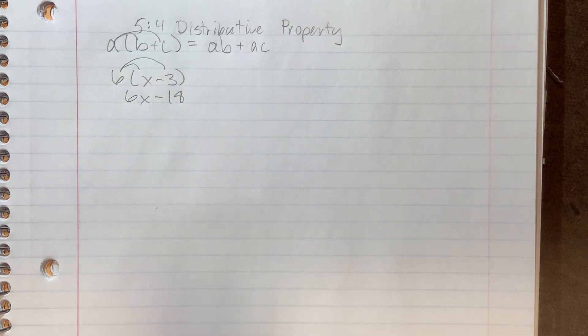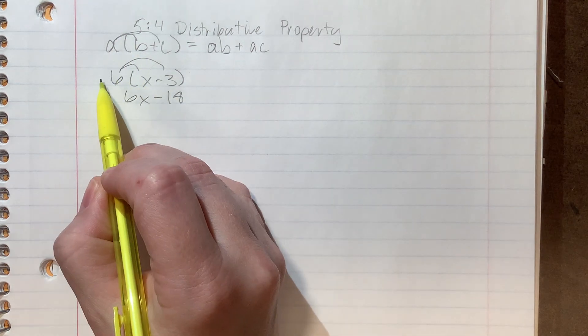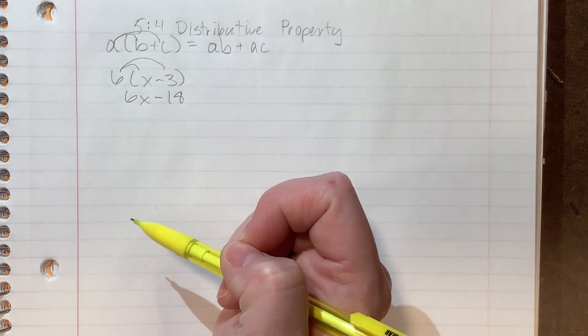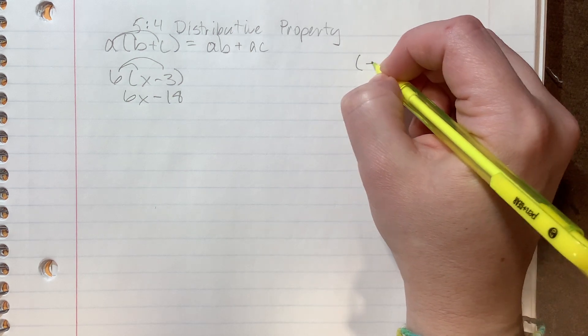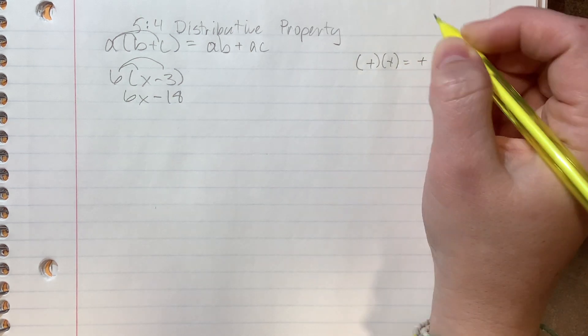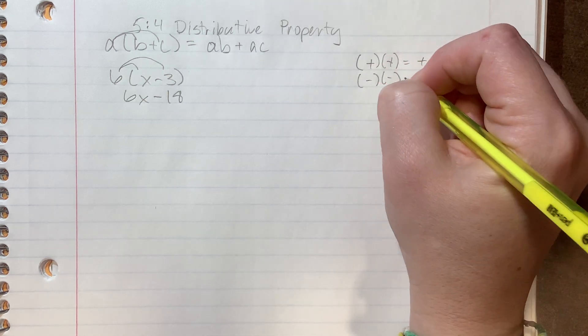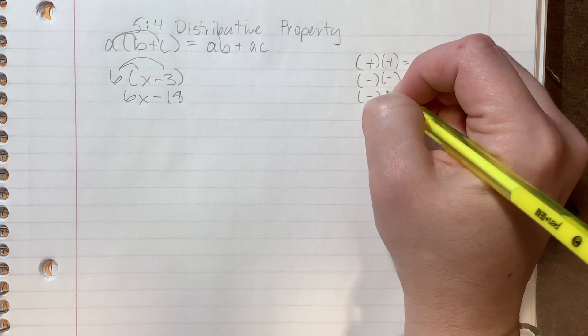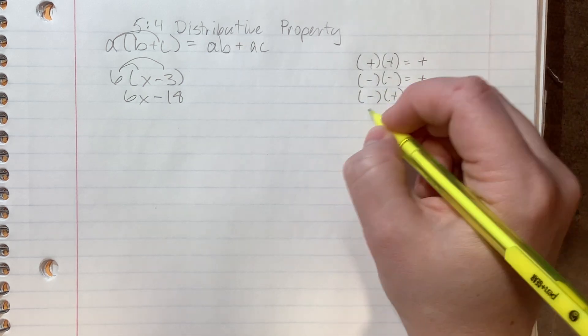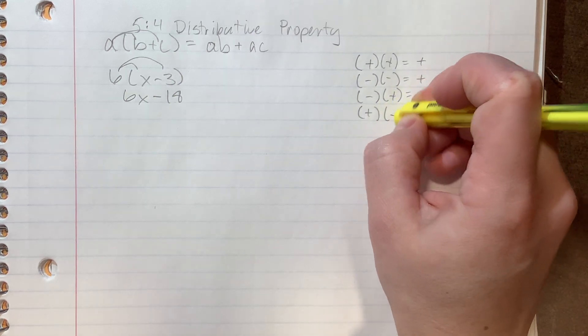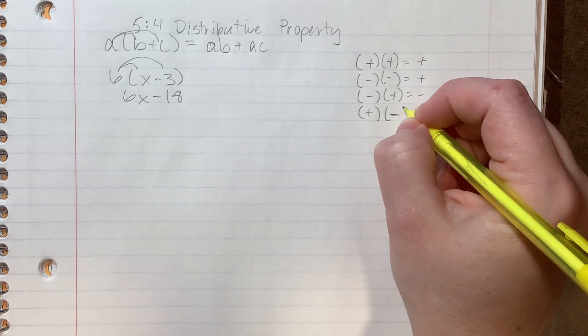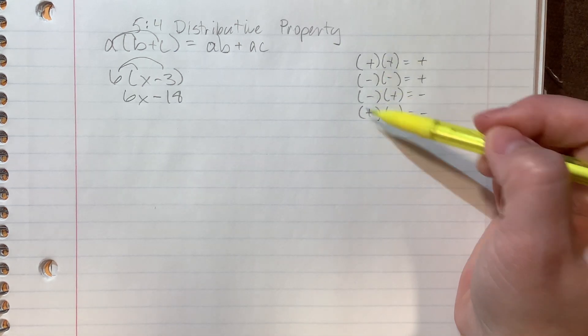Now some things that you need to remember to make this distributing easier is let's remember our rules for positive and negative multiplying because we can have a negative number on the outside or negative numbers in here and multiply stuff through. So let's just remember that a positive times a positive is positive and a negative times a negative is positive. Then if you have one negative somewhere, then the answer is negative. So hopefully you guys remember that.